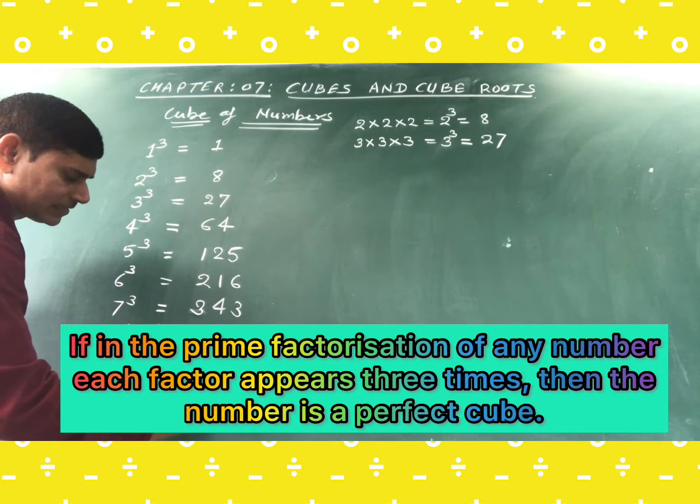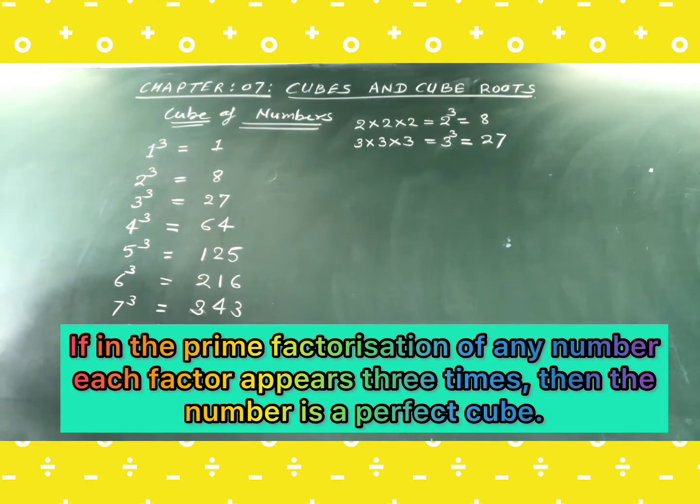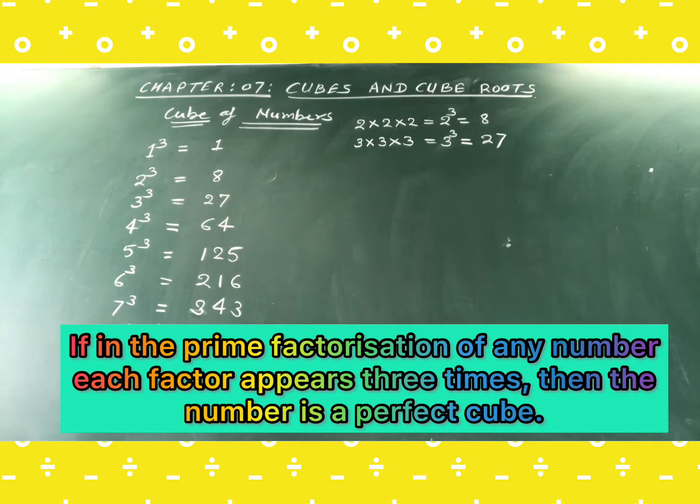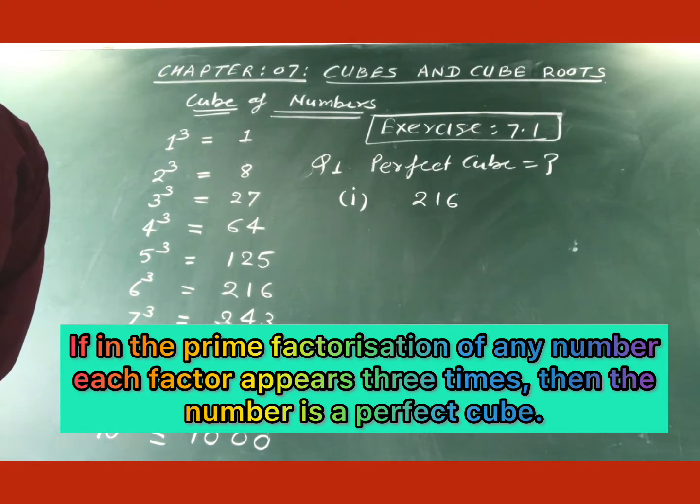And 9 cube means this is 729. And 10 cube, this is 1000. So these are the cubes of the digits 1 to 10. And you should actually remember all these cubes so that you can apply them directly in the question.